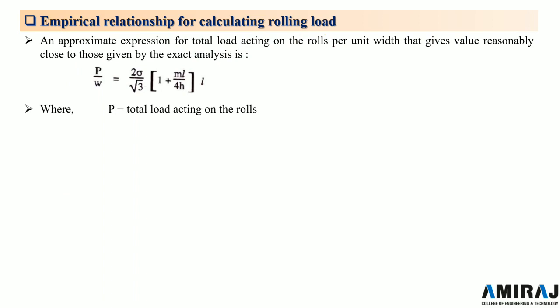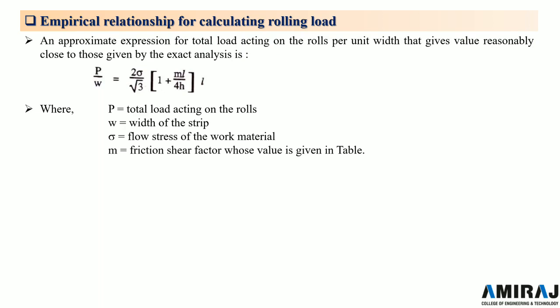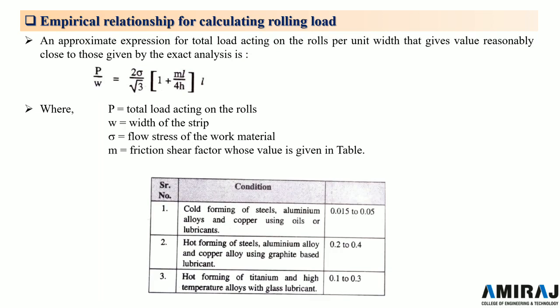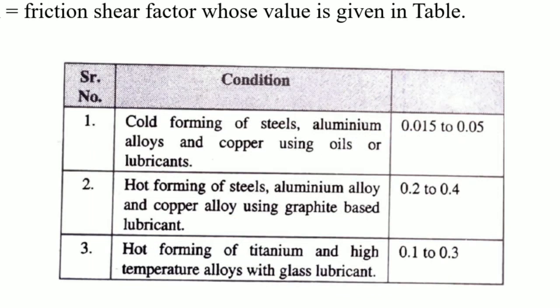In this formula, capital P is the total load acting on rolls, W is the width of strip, and Sigma is the flow stress of the work material. M is the friction shear factor, whose value is given in a table for different conditions. The first condition is cold forming of steels, aluminum alloys, and copper using oils or lubricants, and the friction shear factor M for this condition is given.